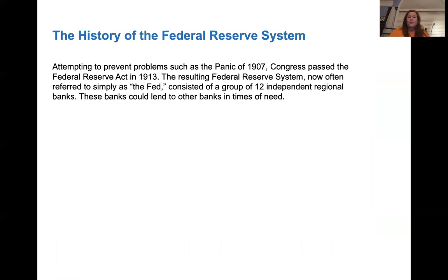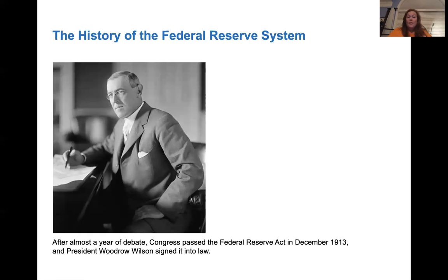In the history of the Federal Reserve System, we had the Panic of 1907 — again, a run on banks. That led Congress to pass the Federal Reserve Act of 1913. We've got the Federal Reserve, called 'the Fed,' with 12 independent regional banks that can lend each other money if they need to. Woodrow Wilson actually signed the Federal Reserve Act into law in 1913, prior to the Great Depression.